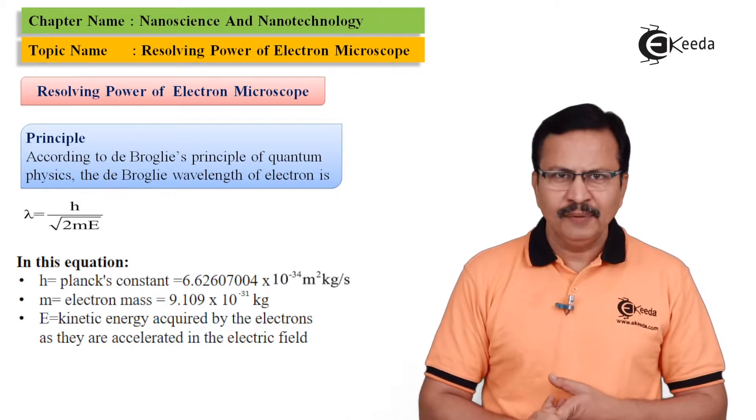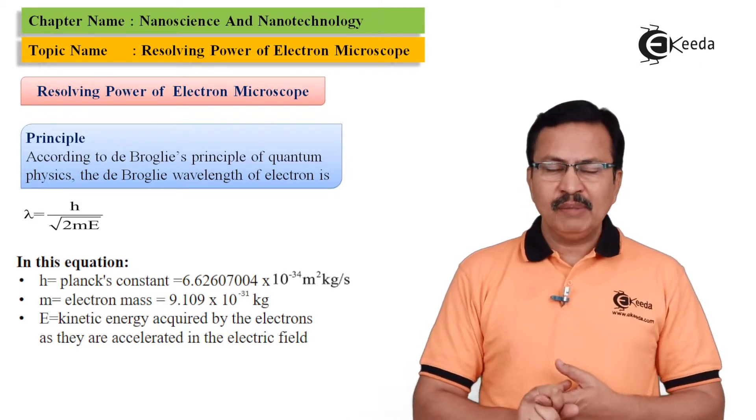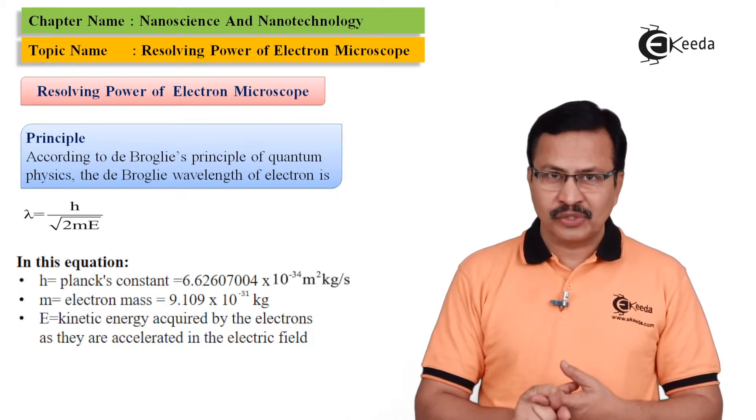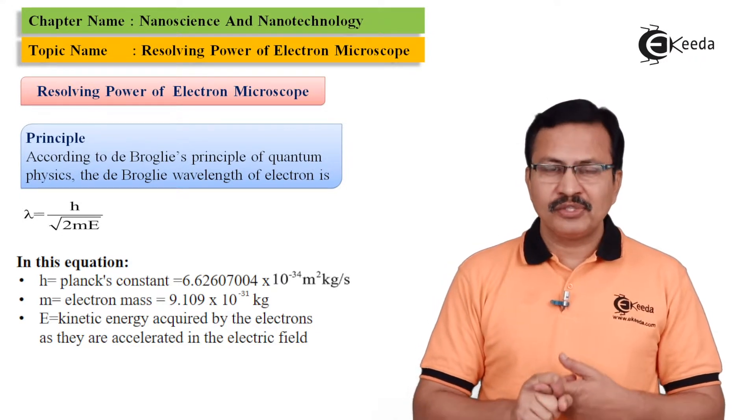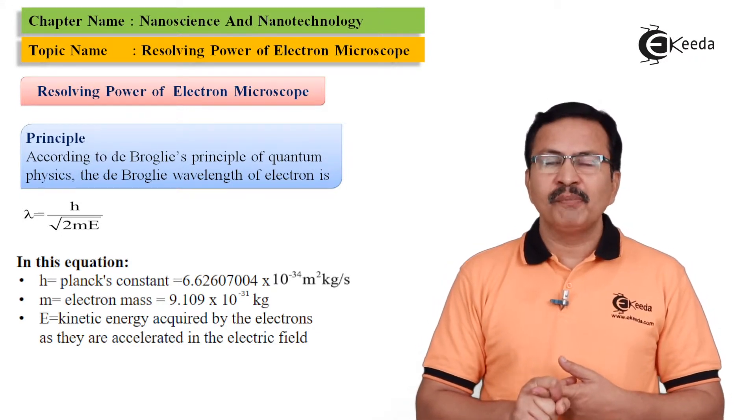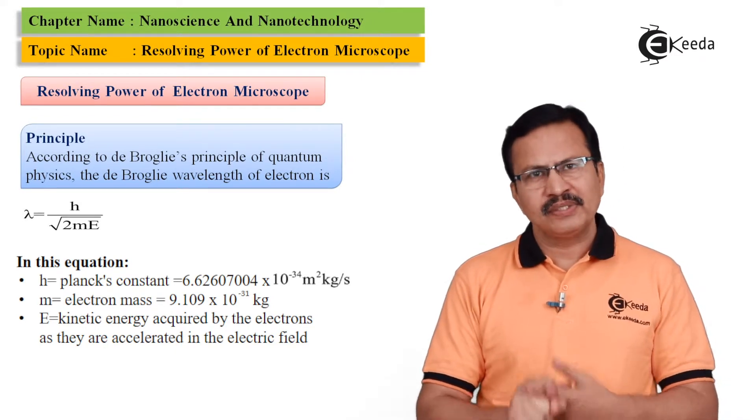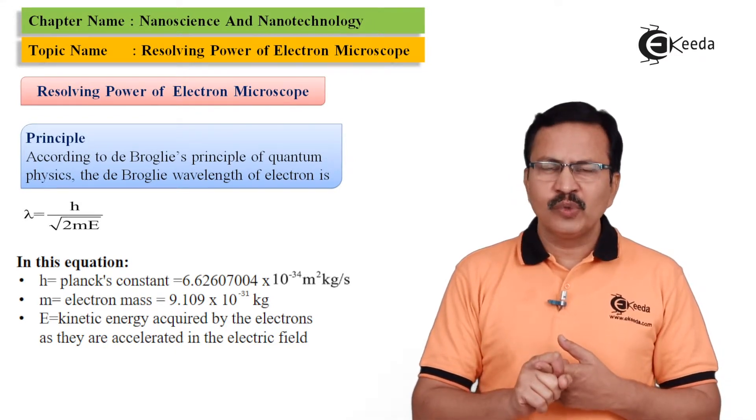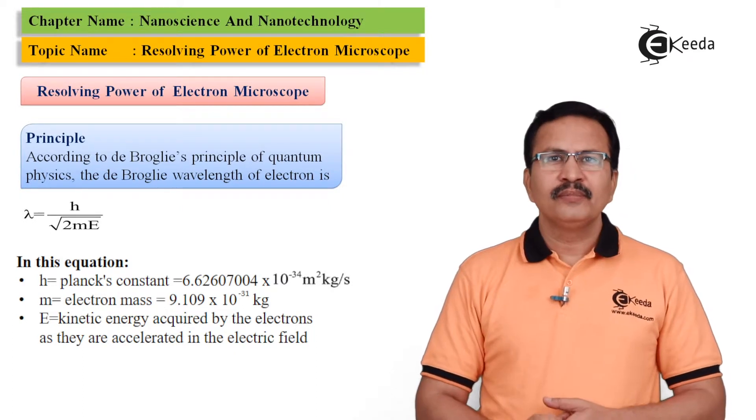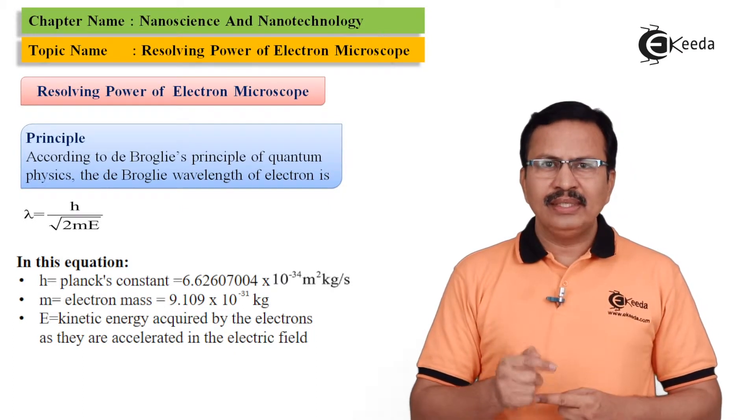In this formula, h represents the Planck's constant, whose value is 6.63 × 10⁻³⁴ m²kg/s or which also works out to joule second. The second quantity is m.